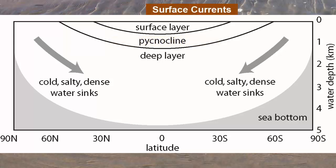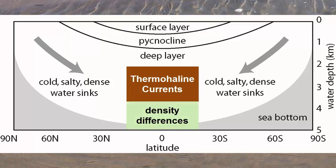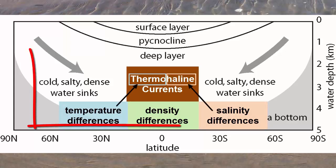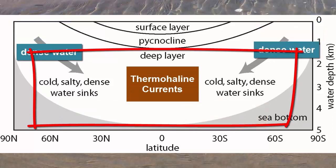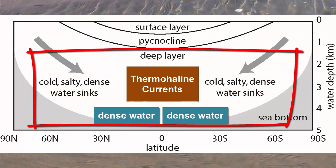Surface currents are primarily caused by winds blowing across the surface of the oceans, and therefore happen in the surface layer. Thermohaline currents are caused by density differences, which are themselves caused by differences in the salinity or temperature of the water — hence the name thermohaline. Thermohaline currents are found in the deep layer. They move vertically due to density, and then spread out horizontally to minimize pressure differences.